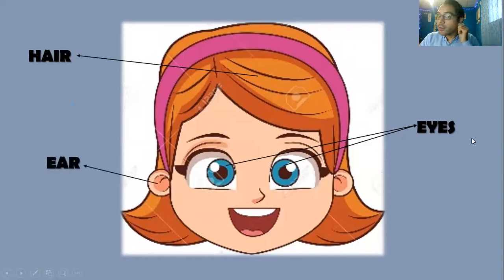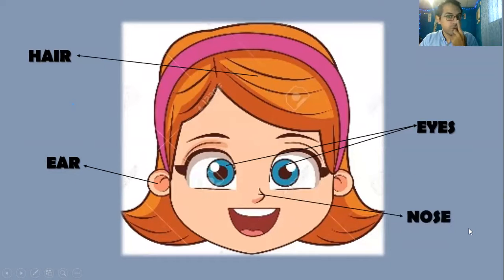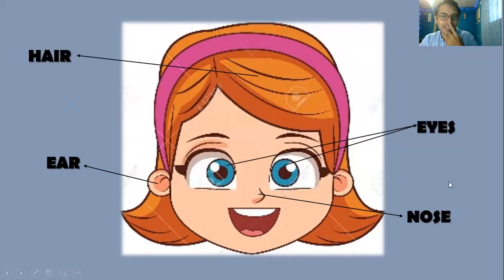Then we have the ear or ears. Si son dos, se dice con una S: ears. Si es solo uno: ear. Then we have the nose. La nariz. Nose. Se escribe N-O-S-E. Siempre hay chistes sobre cómo se dice nariz — nose, no sé, así se dice.